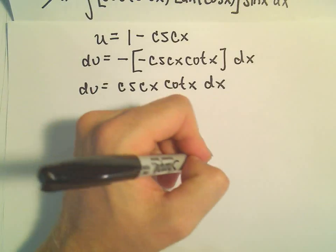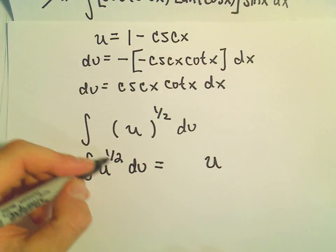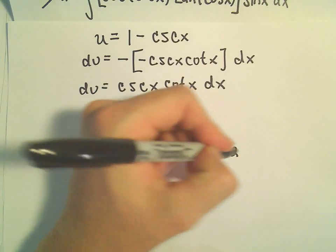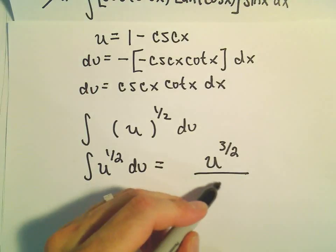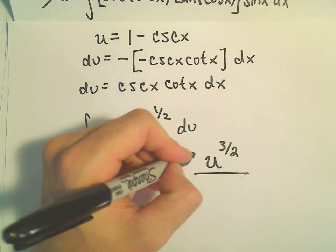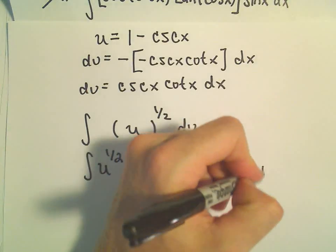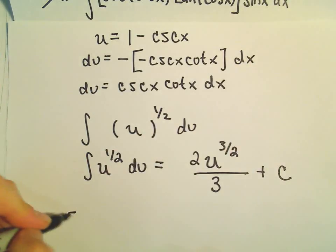Well, to integrate that, we can add 1. So adding 1, we would have 1 half. So 1 over 2 plus 2 over 2 would give us 3 over 2. And then we divide by 3 over 2. But dividing by 3 over 2 is the same as multiplying by 2 over 3 plus c.